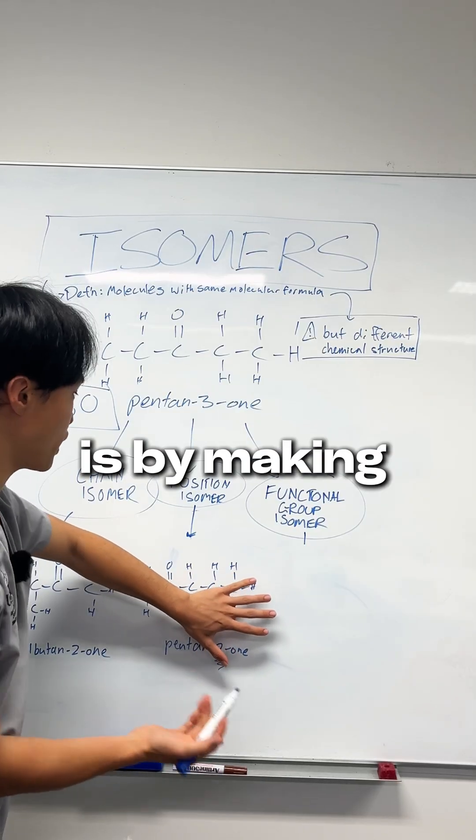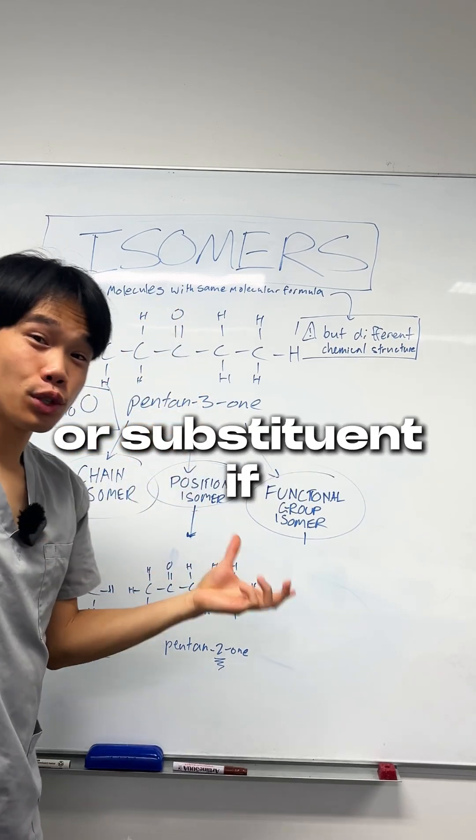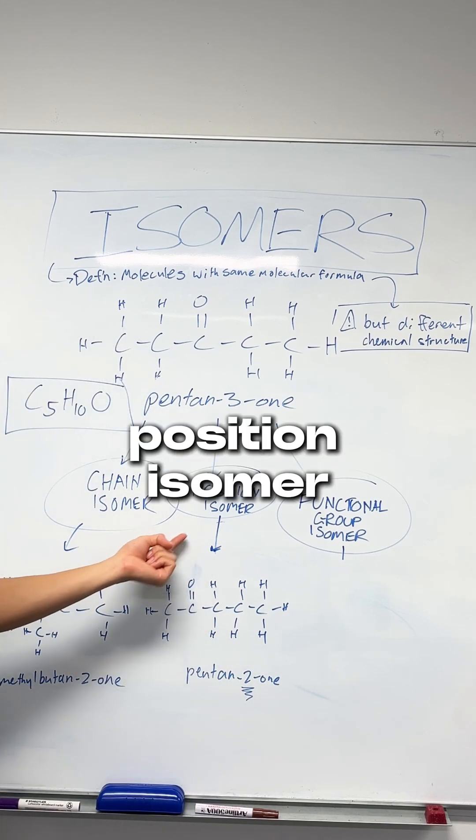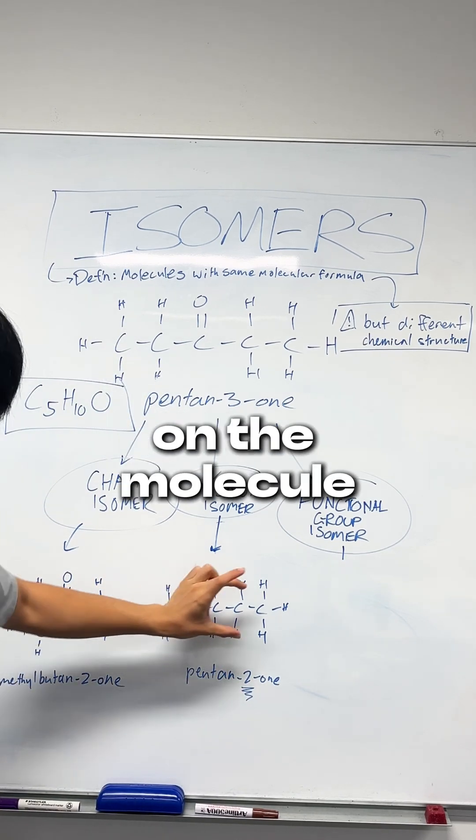The second way that you can do this is by making a position isomer, which is where you move the functional group or substituent if you have one to somewhere else on the chain. That's why pentan-2-one is a position isomer since the ketone is on a different position on the molecule.